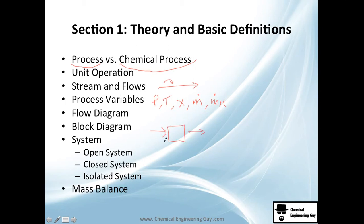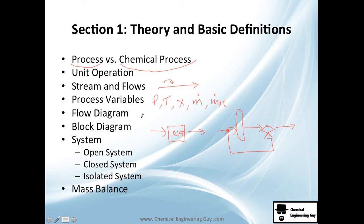We'll need to understand block diagrams — you probably have seen them: material goes in and out, maybe through a reactor. Then we're going to do something more technical: flow diagrams. For example, you have a distillation column — you use a column symbol, not a block — you pump it, send streams, and recycle. This is more technical but still not as complex as a piping and instrumentation diagram, which you'll also see.